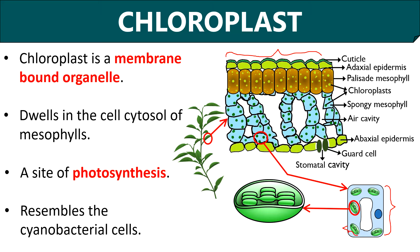We all know that plants prepare their food via photosynthesis. Chloroplasts play a major role in providing a site for the dark and light reactions of photosynthesis to occur, which we will discuss later in this video. Interestingly, it is believed that the chloroplast evolved via endosymbiosis. Chloroplasts show close resemblance with cyanobacterial cells and are considered ancestors of cyanobacteria.